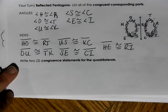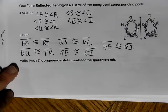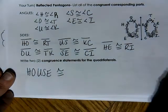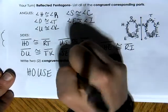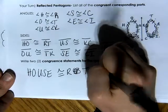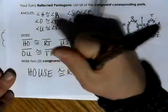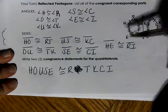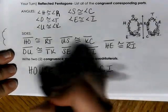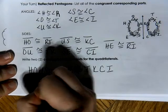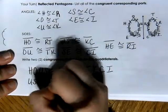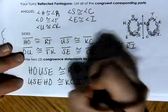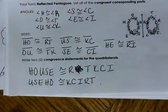For congruent statements, we write down all of the letters: pentagon HOUSE is congruent to pentagon RTKCI. Another congruent statement, making sure to go all the way around: pentagon USEHO is congruent to pentagon KCIRT. Those are two valid congruent statements.